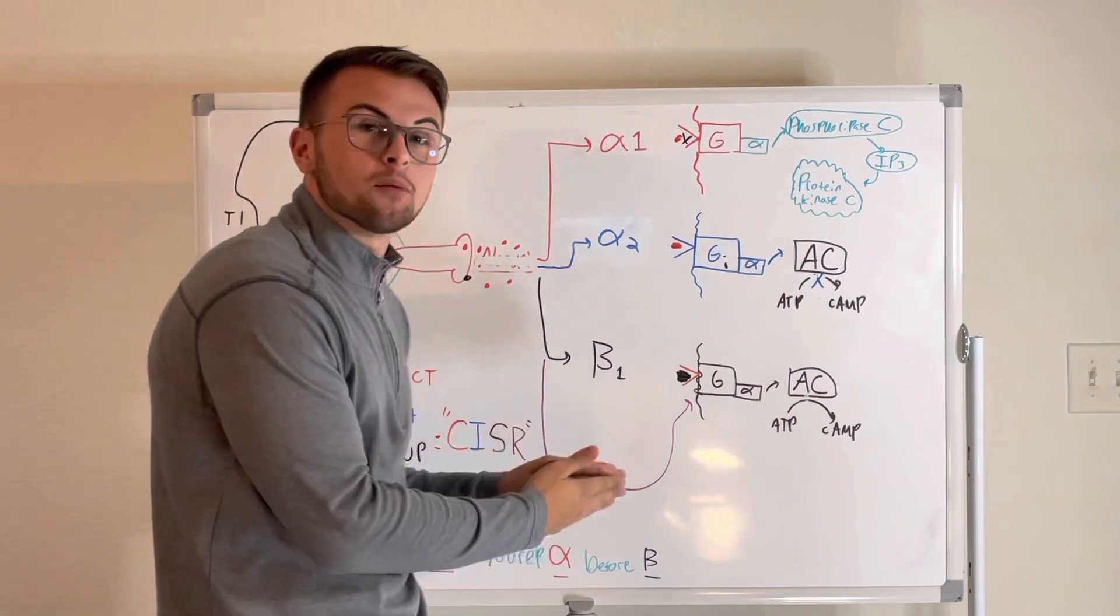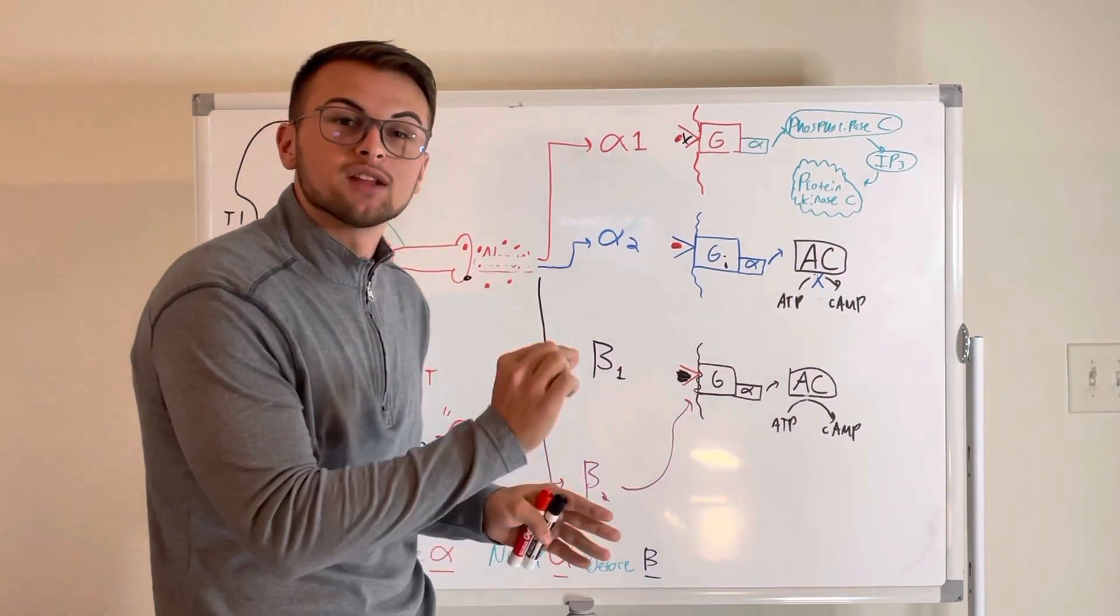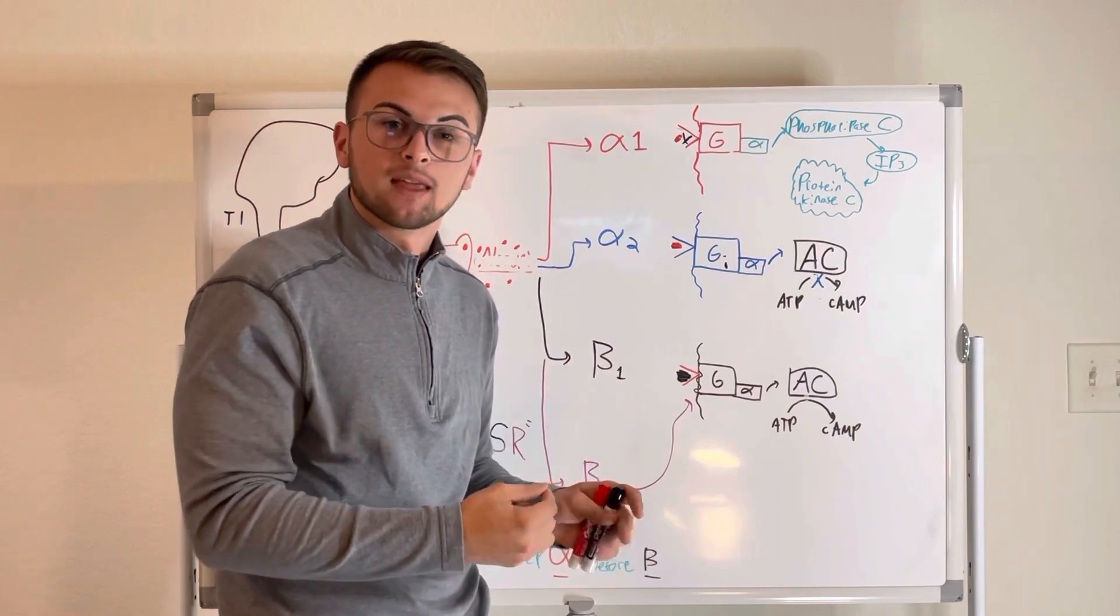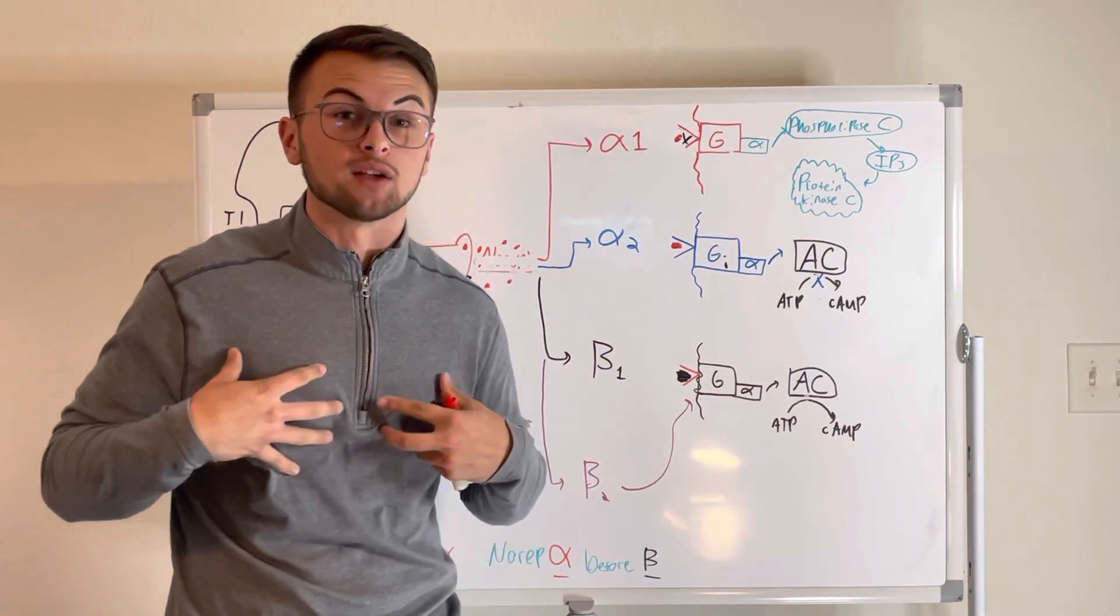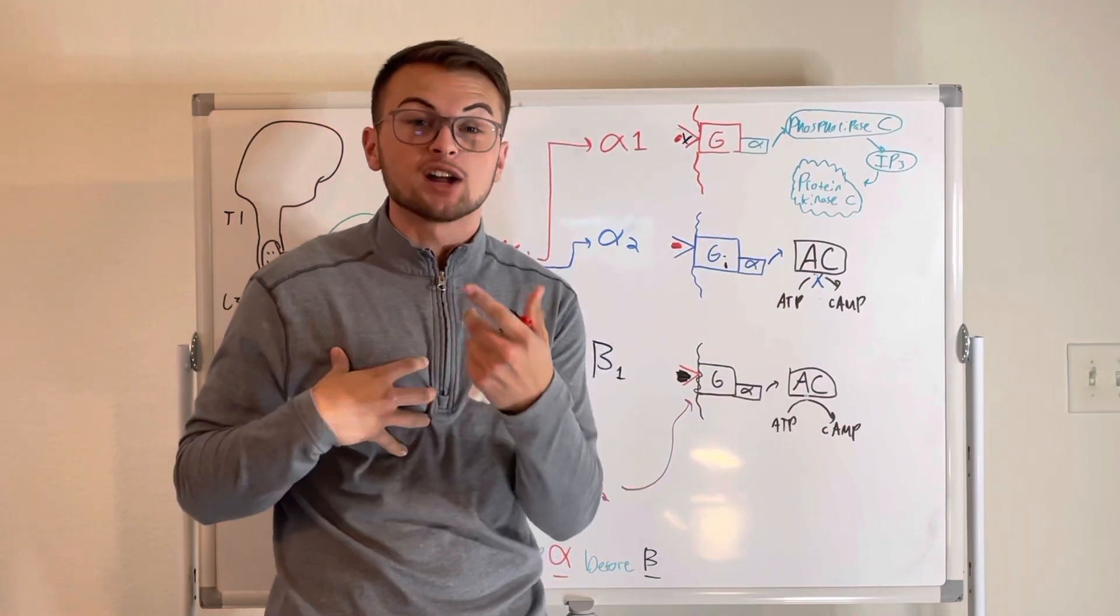So lastly, we're going to talk about the beta-2 receptors. And beta-2 receptors relax. They are found in the blood vessels of our skeletal muscle, in our bronchioles, and in our GI tract and bladder.